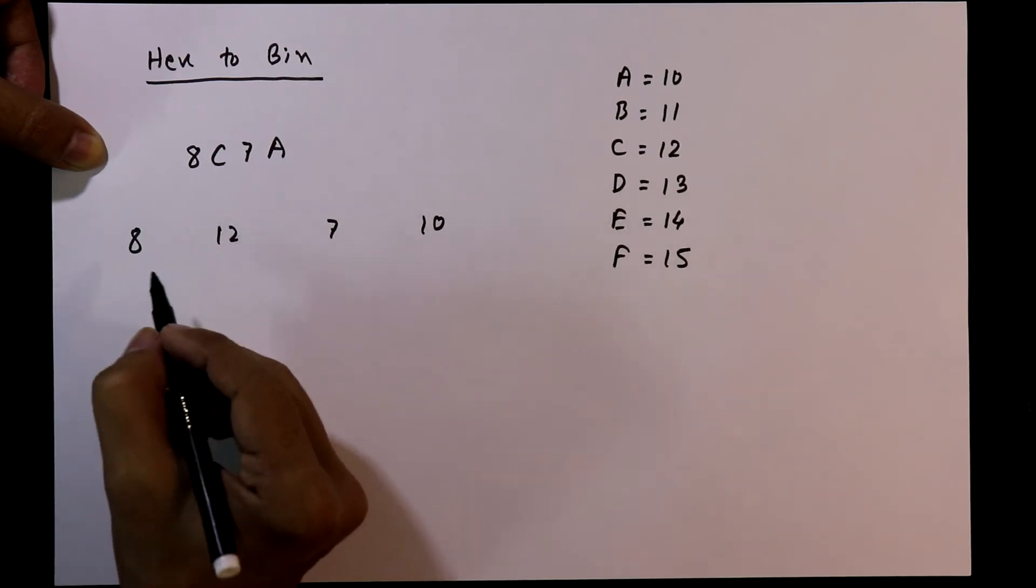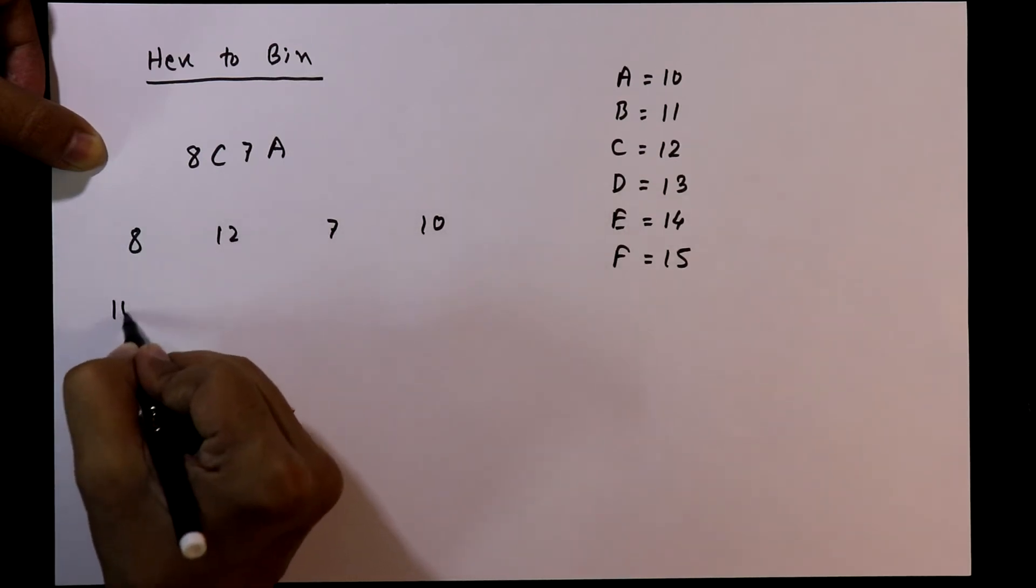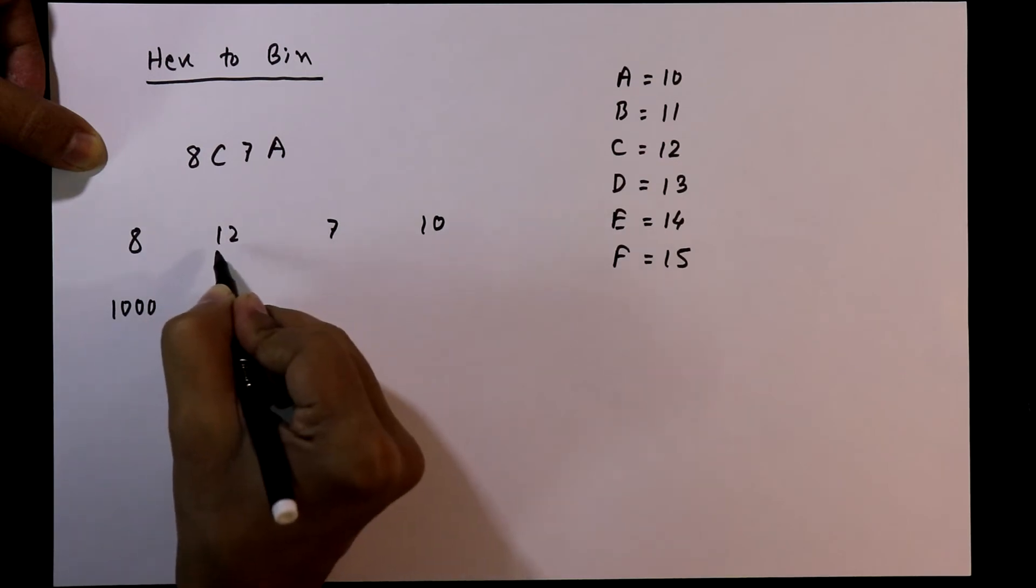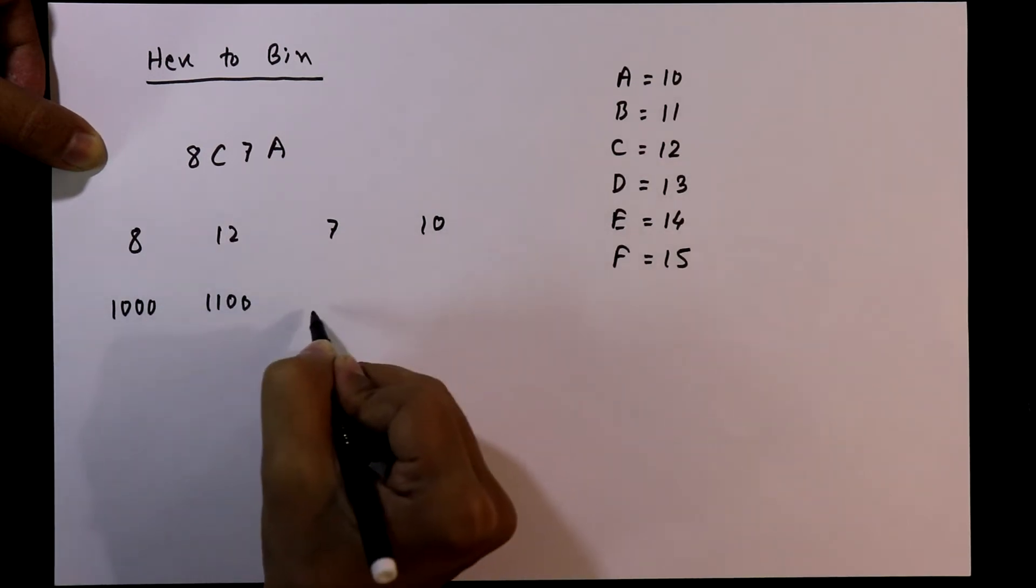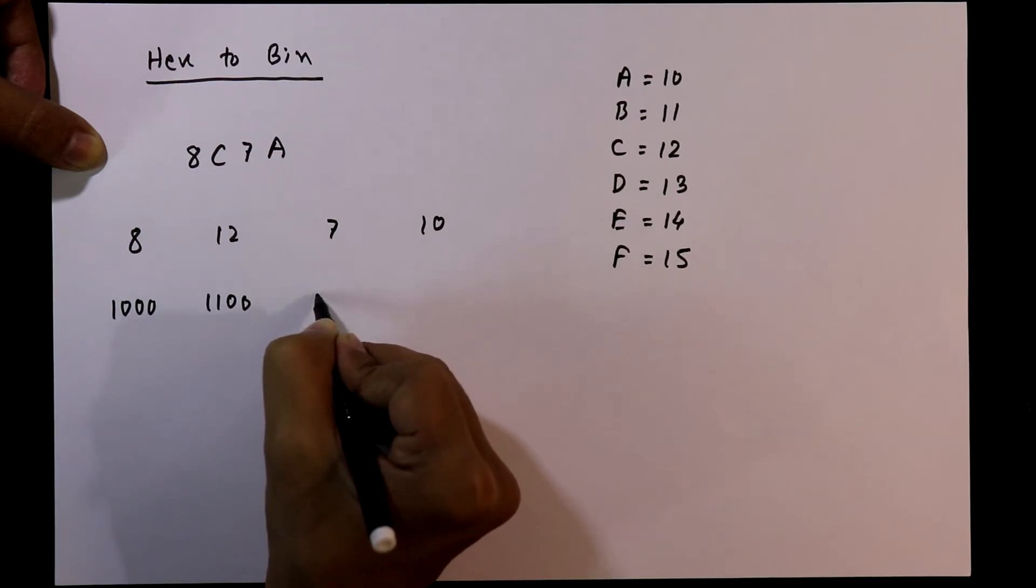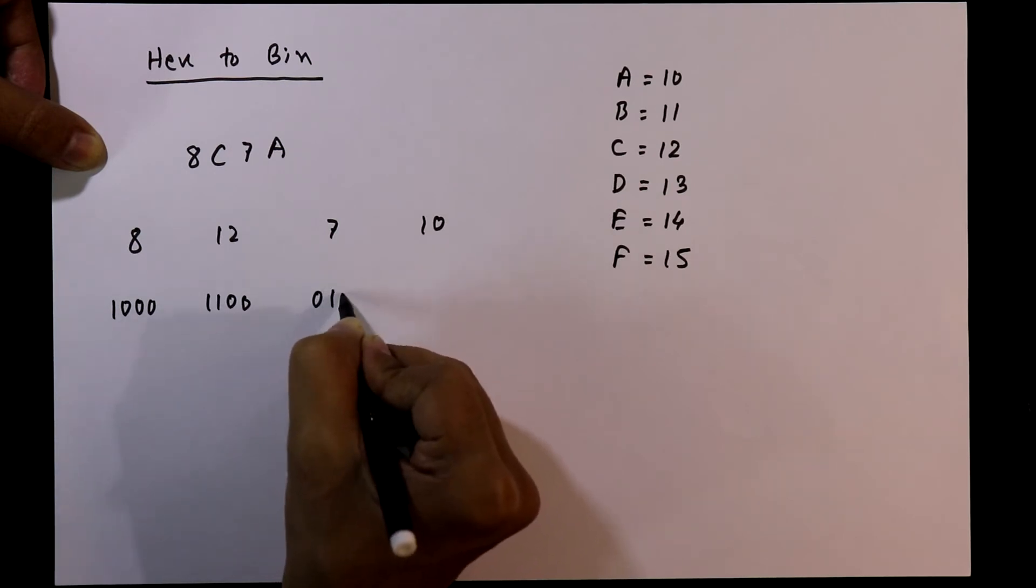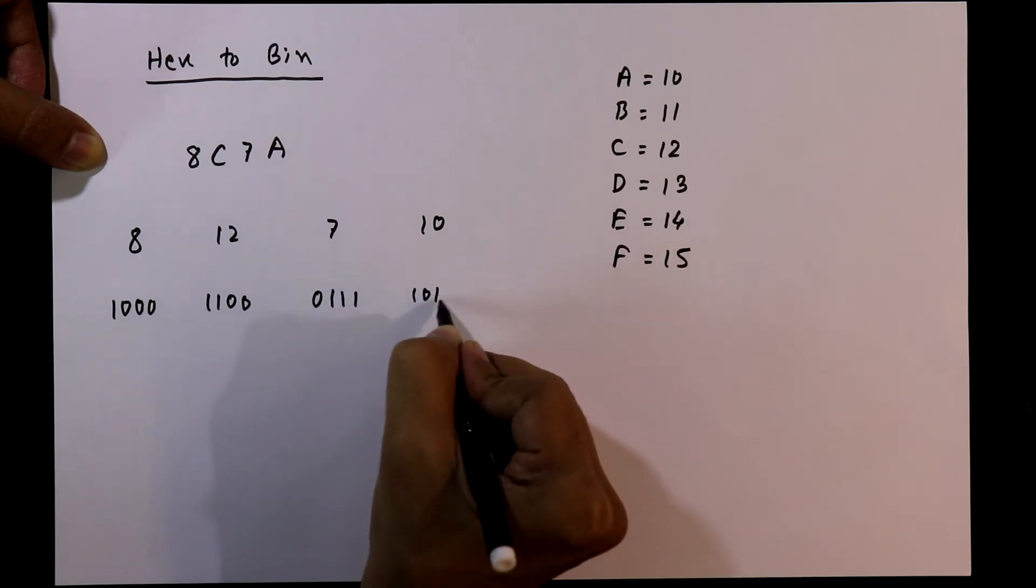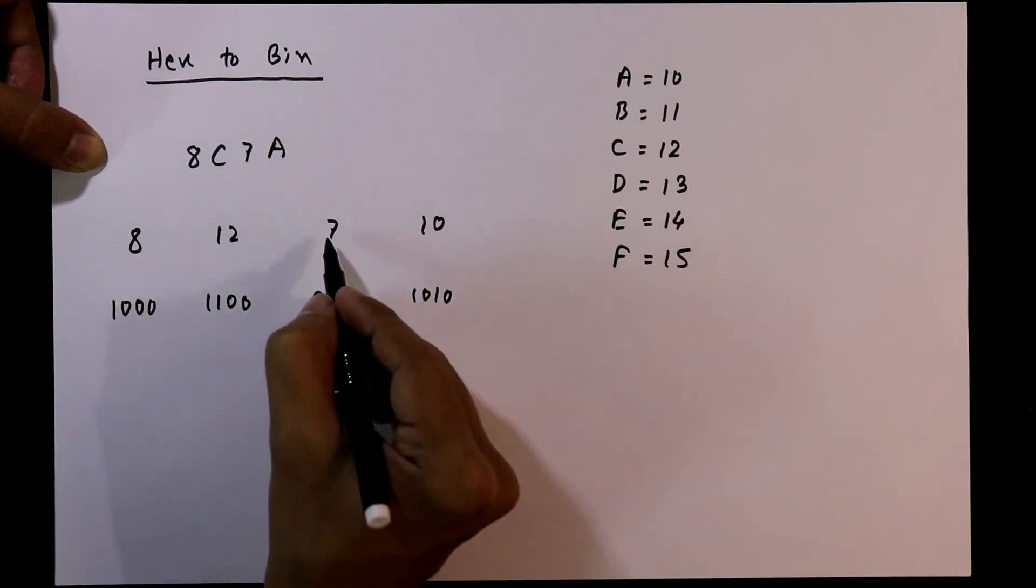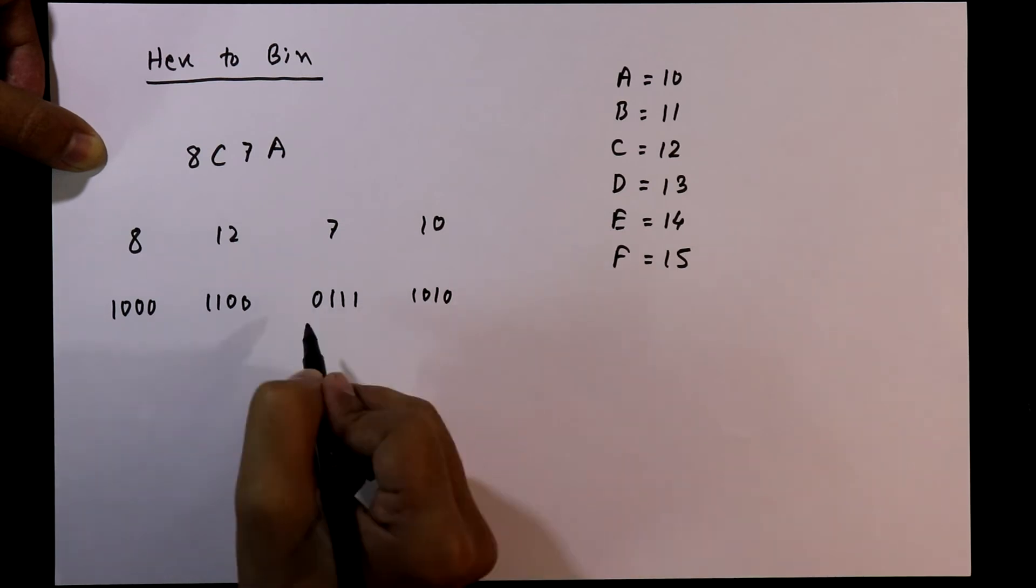So the binary equivalent of 8 is 1000, 12 is 1100, for 7 it is 0111, and for 10 it is 1010. We have to write all the numbers in 4 bits.